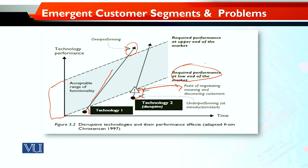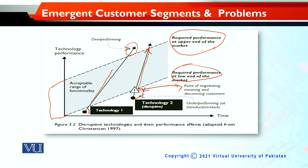Phir aap dekhte hain ke it touches the required performance at the low end of the market — maybe in a new category or some new product — and then it also keeps up within the required performance of the upper end of the market. Yeh uski success story hai. Aur agar aap ise mazid behtar karte hain, to yeh over-perform bhi kar leta hai — aur over-performance ke mutalliq phir aapko dobara faisla karna padta hai ke kya is ki product category change karni hai ya ise mazid usage mein bhi laaya ja sakta hai, with a new segment in mind.